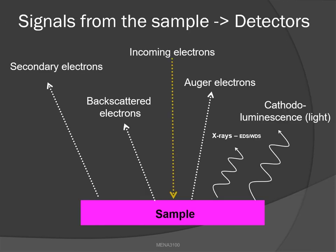Signals from the sample are detected by different types of detectors. For instance, we collect secondary electrons, backscatter electrons, Auger electrons, cathodoluminescence, and X-rays that we use for EDS and WDS analysis.